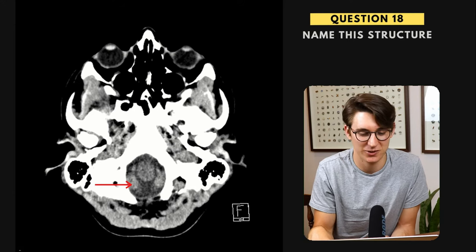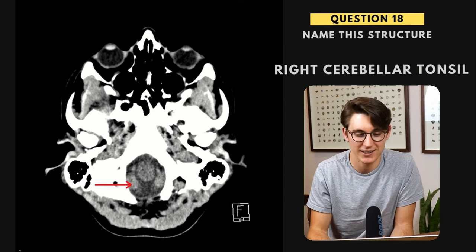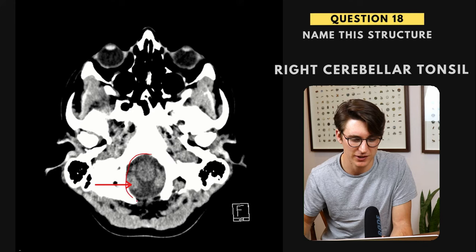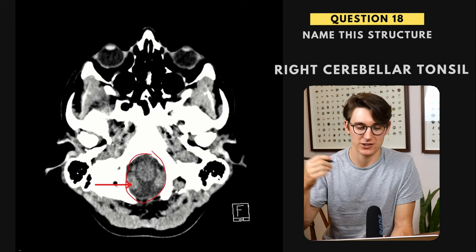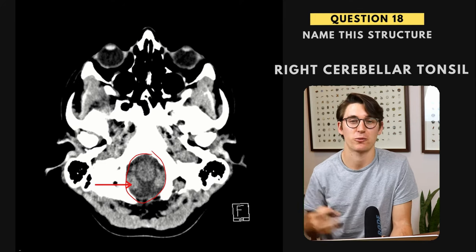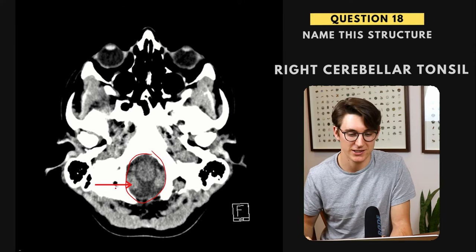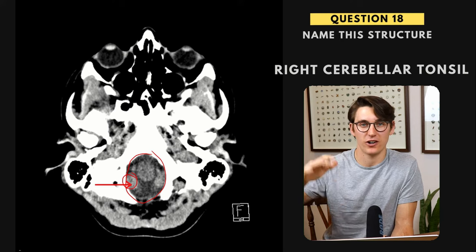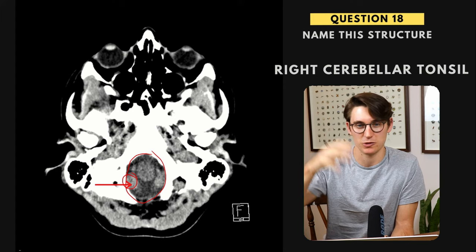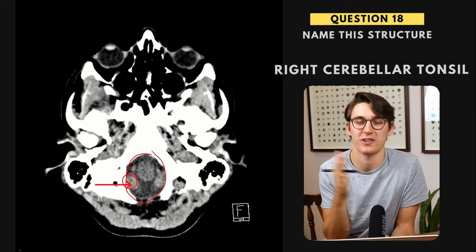Question eighteen, we're asked to label this structure — this is a really important plane to get used to on a CT scan. This is our right cerebellar tonsil. We're at the level of the foramen magnum here, and many times in our careers as radiologists, we're going to be asked to assess this area — have we got signs of raised intracranial pressure or herniation of the brain through the foramen magnum? We look at these cerebellar tonsils and decide how far they are pushed down. Generally, we don't want more than three millimeters extending through the foramen magnum.